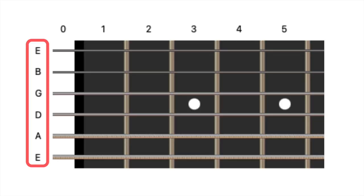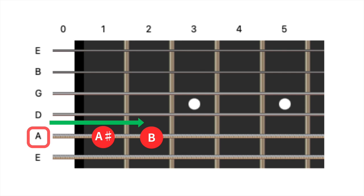Knowing these open string notes is fundamental because they serve as a reference point for finding all the other notes on the fretboard. For example, if you know that the open 5th string is an A, then you know that the first fret of the fifth string is A-sharp, the second fret is B, and so on. Remember to take the time to memorize these open string notes. They will be your guiding stars as you navigate the fretboard.